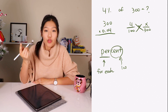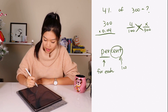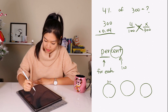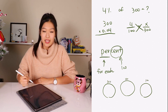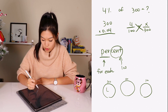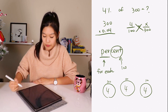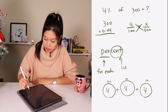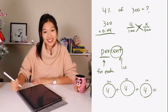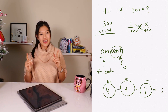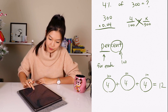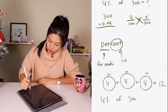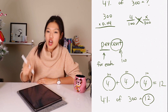And then how many hundreds do I have in 300? Three. So I have 100 here, 100 here, 100 here. And I have four in each of them: four, four, and four. All I have to do is just add them together. Four plus four plus four is 12. So four percent of 300 is simply 12.